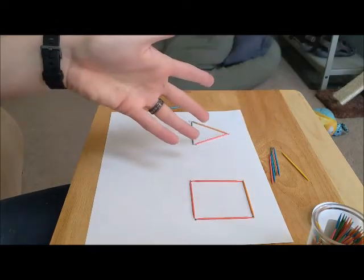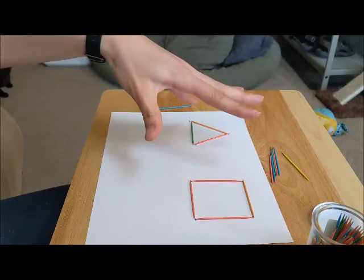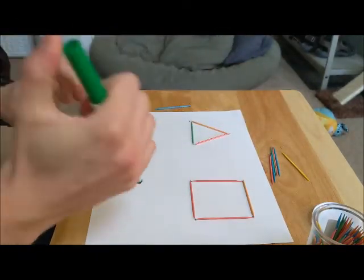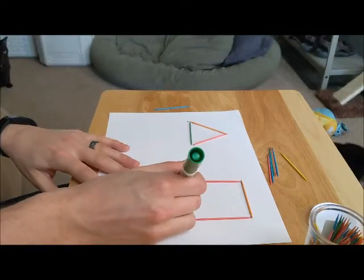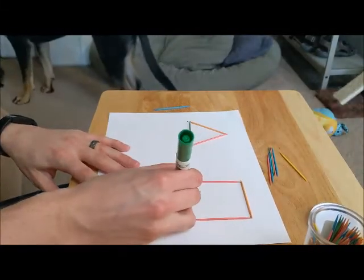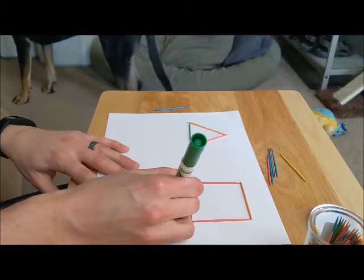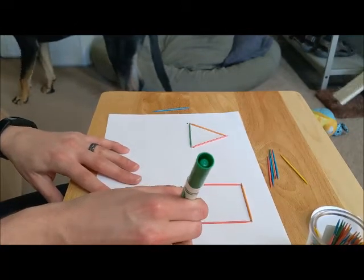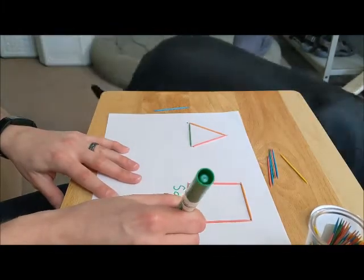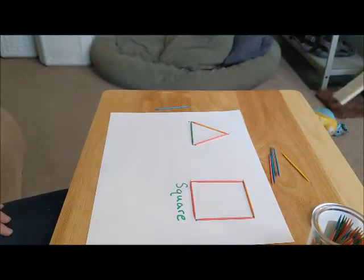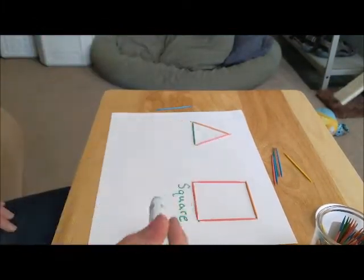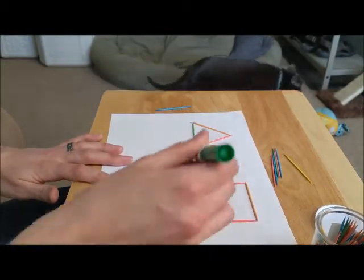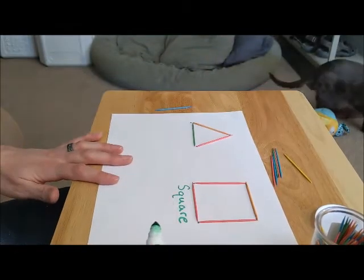So you can do this with all sorts of different shapes. Wherever you have room. You want to work on letter recognition too. Another thing you can do is after they say what the shape is you can spell it together so they say square. S-Q-U-A-R-E. Square. And then if you really want to go above and beyond you can have your kiddo write the letter underneath it or trace it with a pencil depending on where they're at.